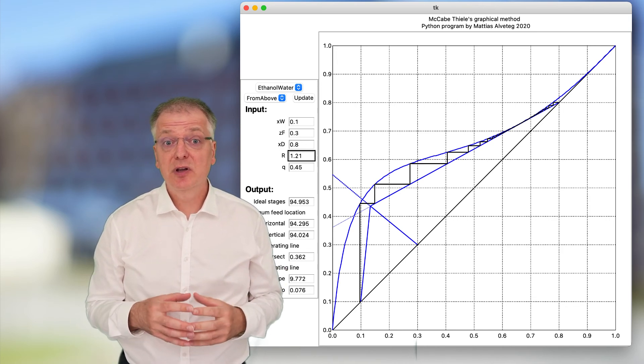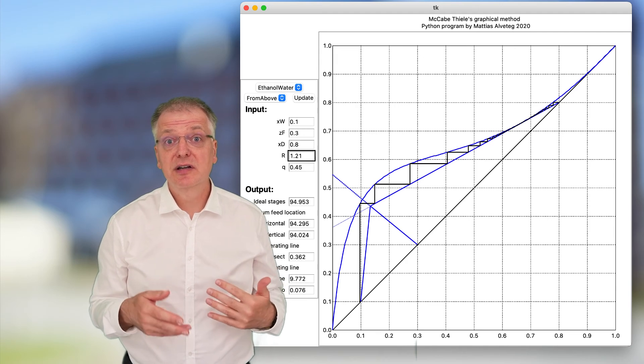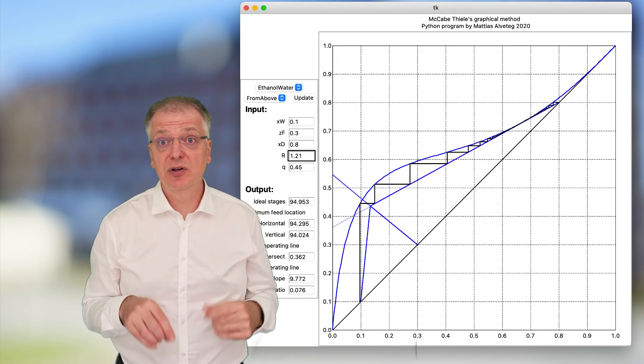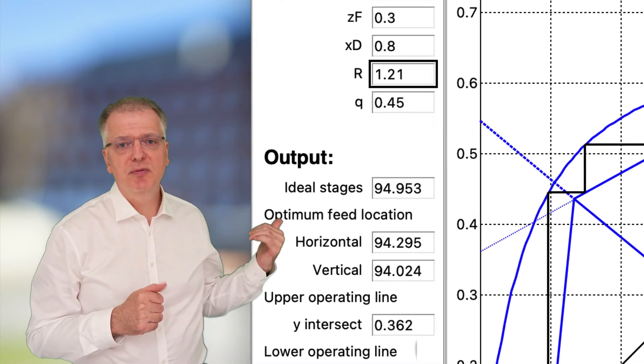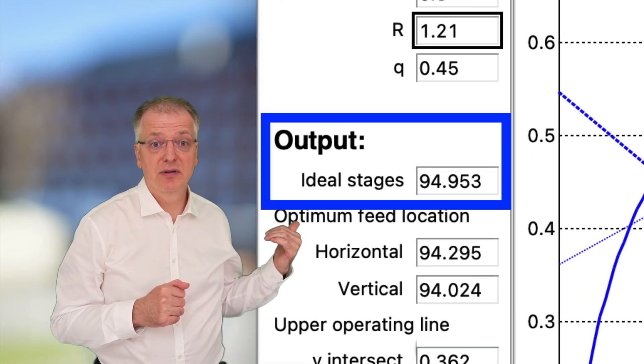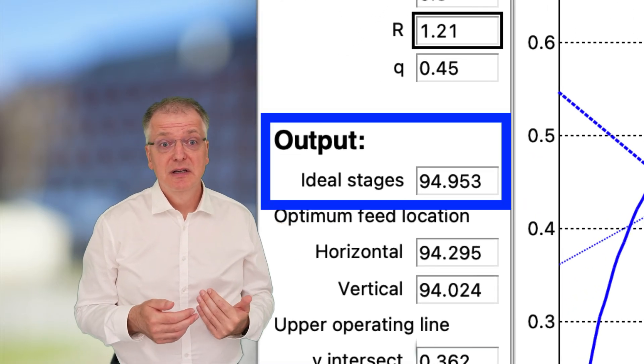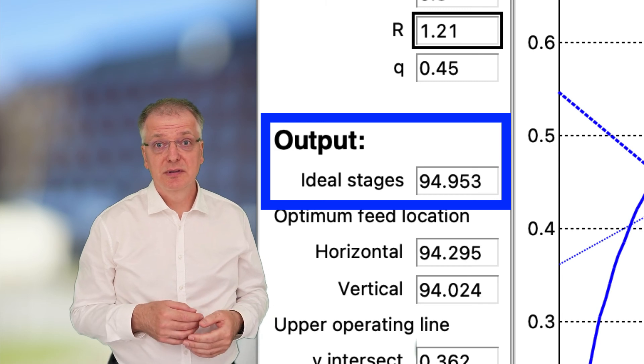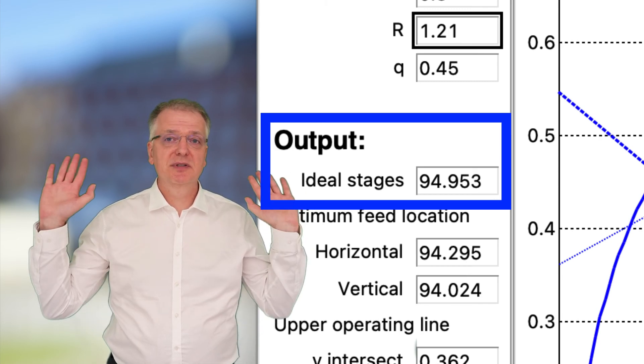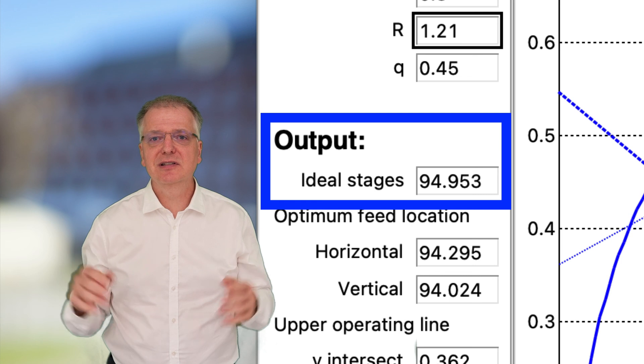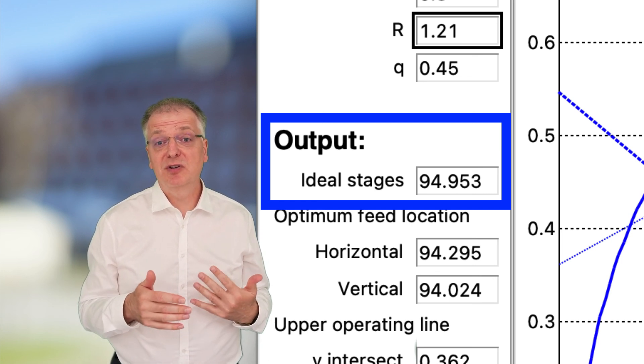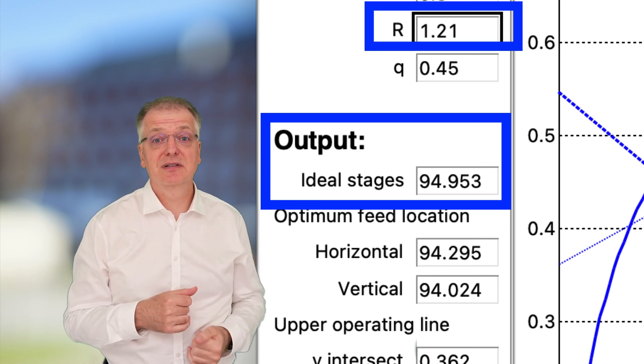is that I often include simple computer generated graphical solutions in the suggested solutions to my exams. But the number of equilibrium trays shown in my simple program here is not important. It's just a result of me giving up and saying, hey, this is close enough. The minimum reflux ratio is approximately this value.